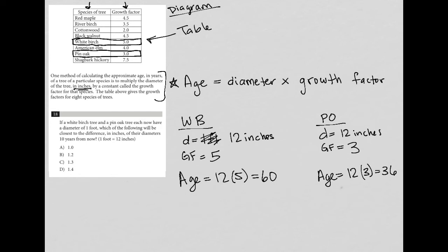So in 10 years, the white birch will be 70. So I can say 70 equals—I do not know what the diameter will be because that's what I'm trying to find. So I'll say D and then times the growth factor, which is not going to change. So D times five.